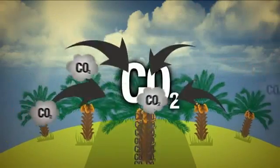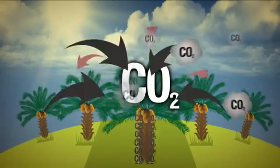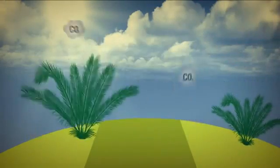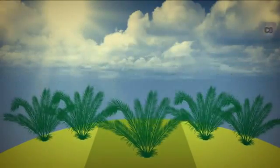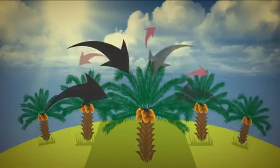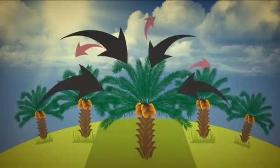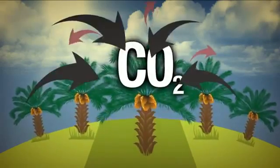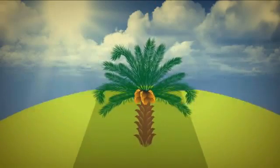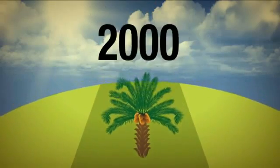Oil palm plantations can also emit carbon from deforestation and effluent ponds at palm oil mills. But more importantly, they are able to remove more carbon than they emit.